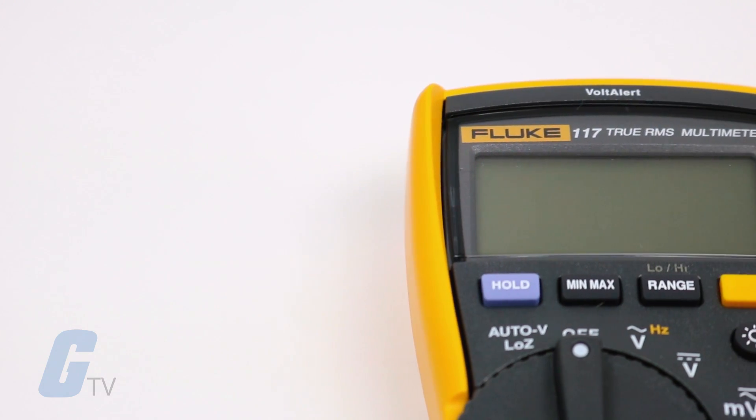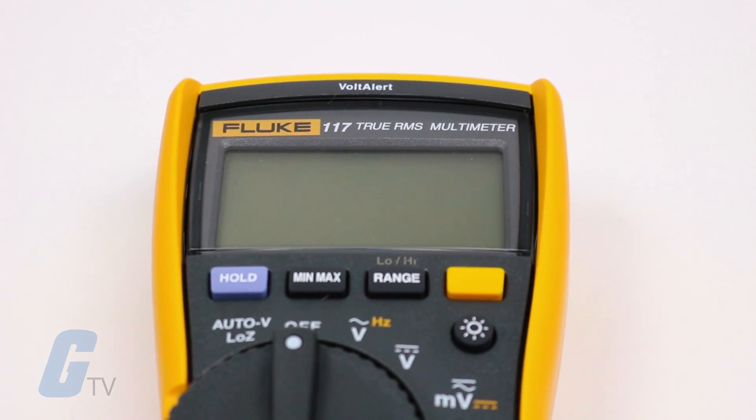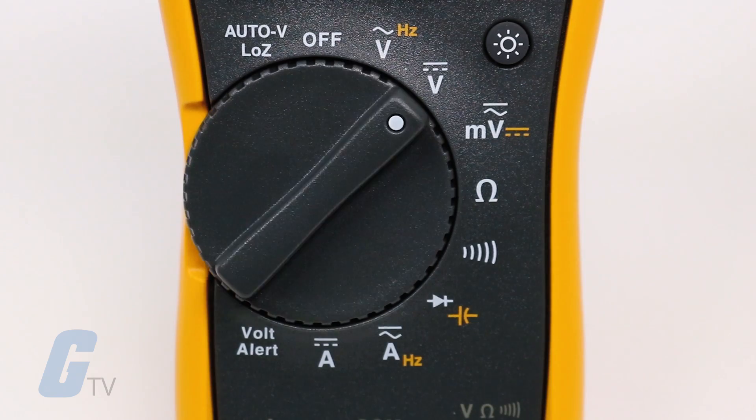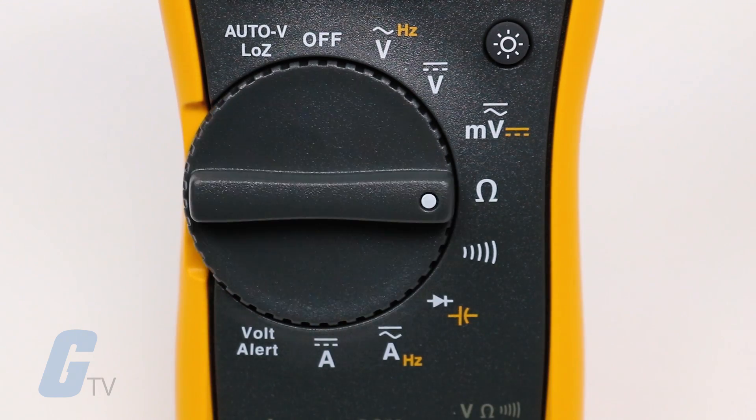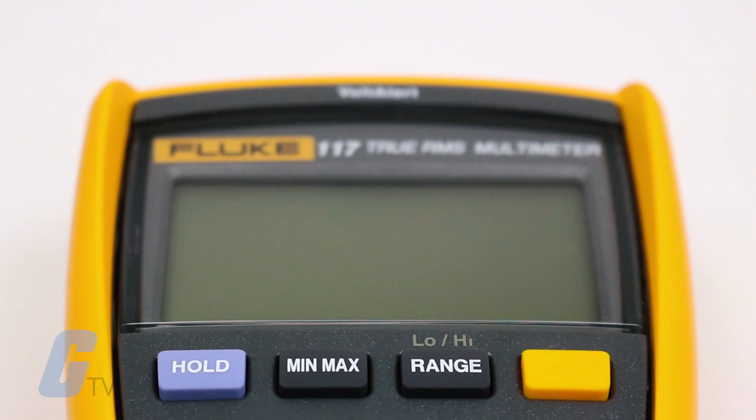This meter measures 10 Amps or up to 20 Amps overload for 30 seconds. Additional measurements include resistance, continuity, frequency and capacitance, and a min-max average feature to record signal fluctuations.